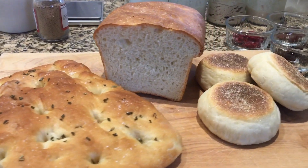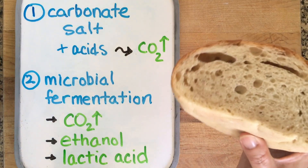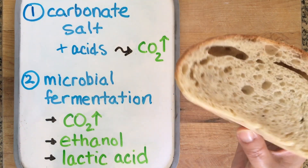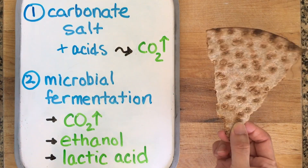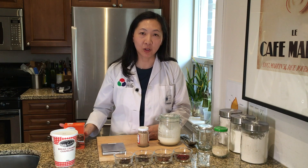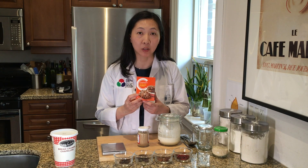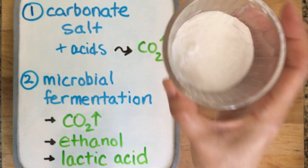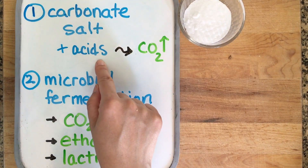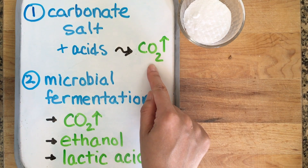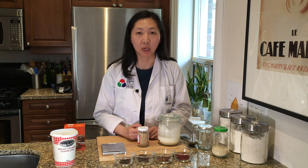When we're talking about leavening baked goods, we're referring to methods to introduce airiness into the final product so that we get something soft and airy rather than hard and dense. There are two main ways to do this. The first method is to use a carbonate salt such as baking soda that will react with acids in the dough or batter and generate carbon dioxide gas bubbles, which give us the leavening effect that we want. The other way is with microbial fermentation.